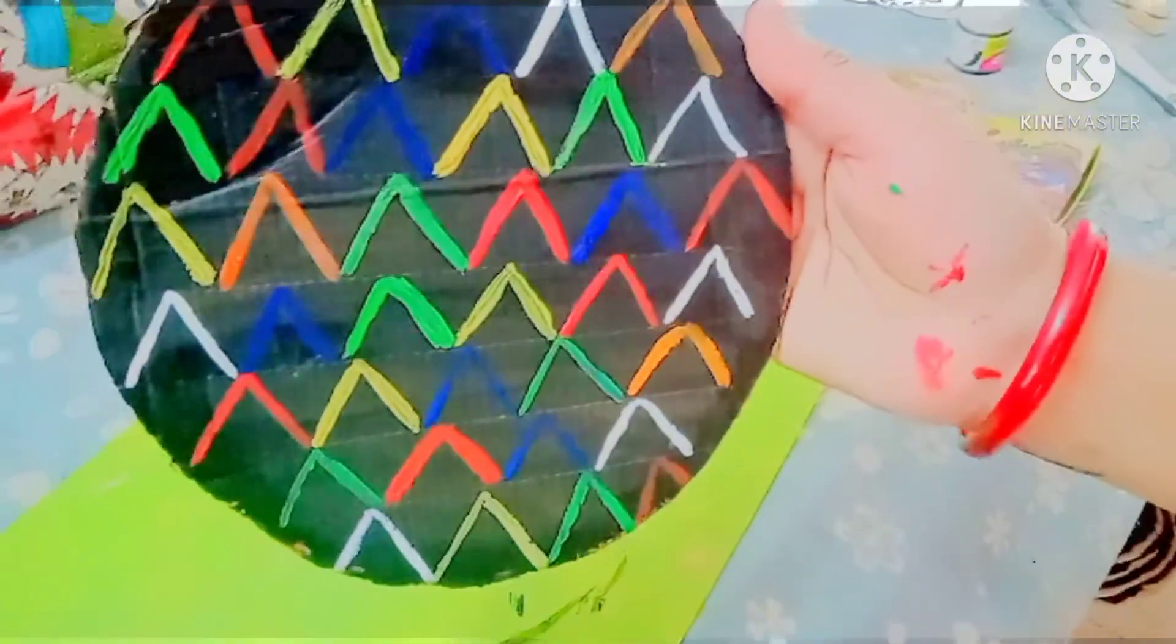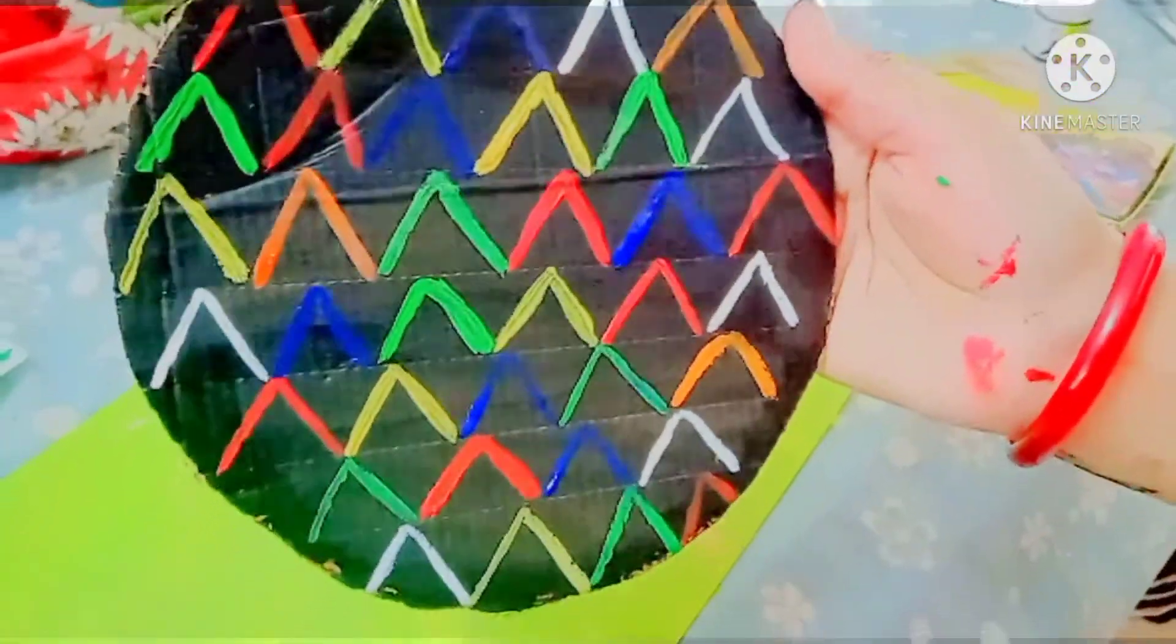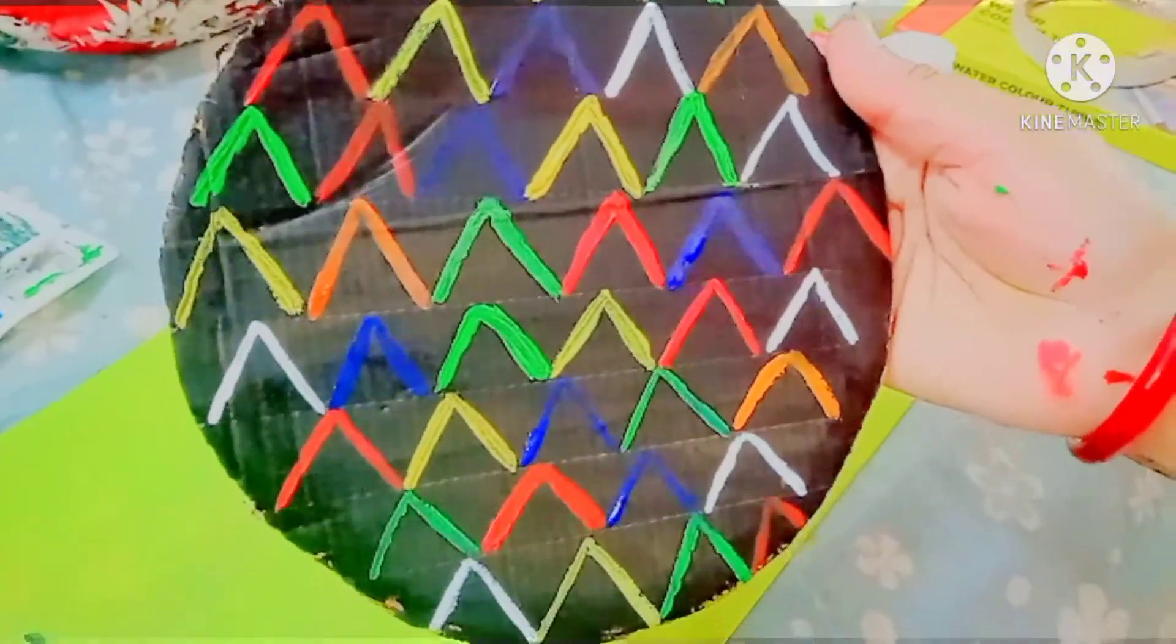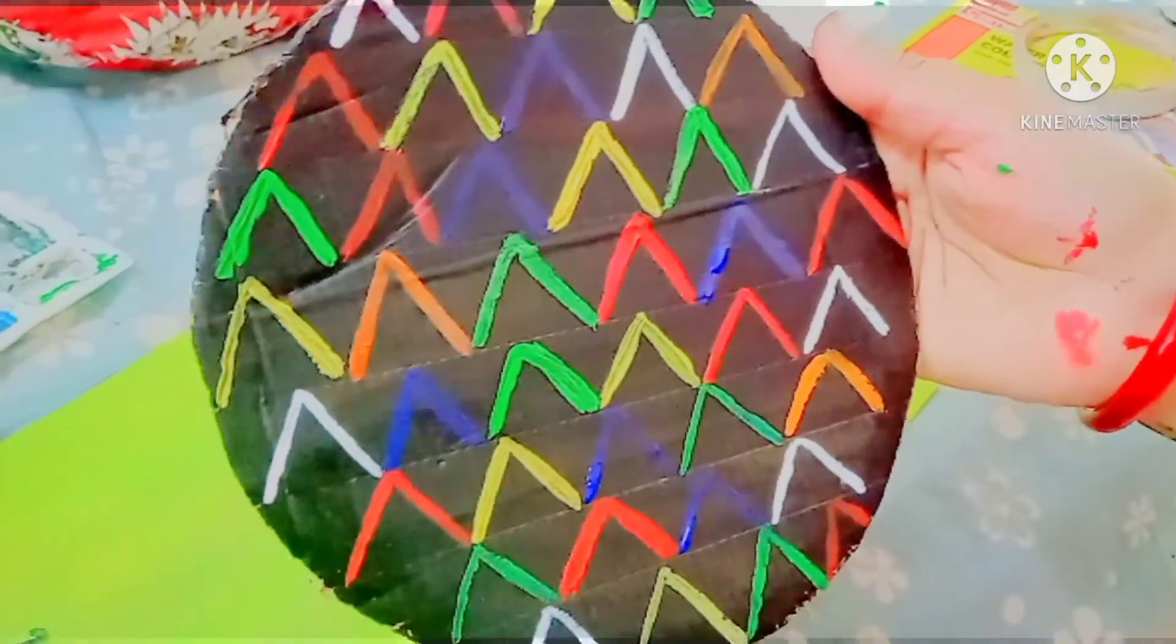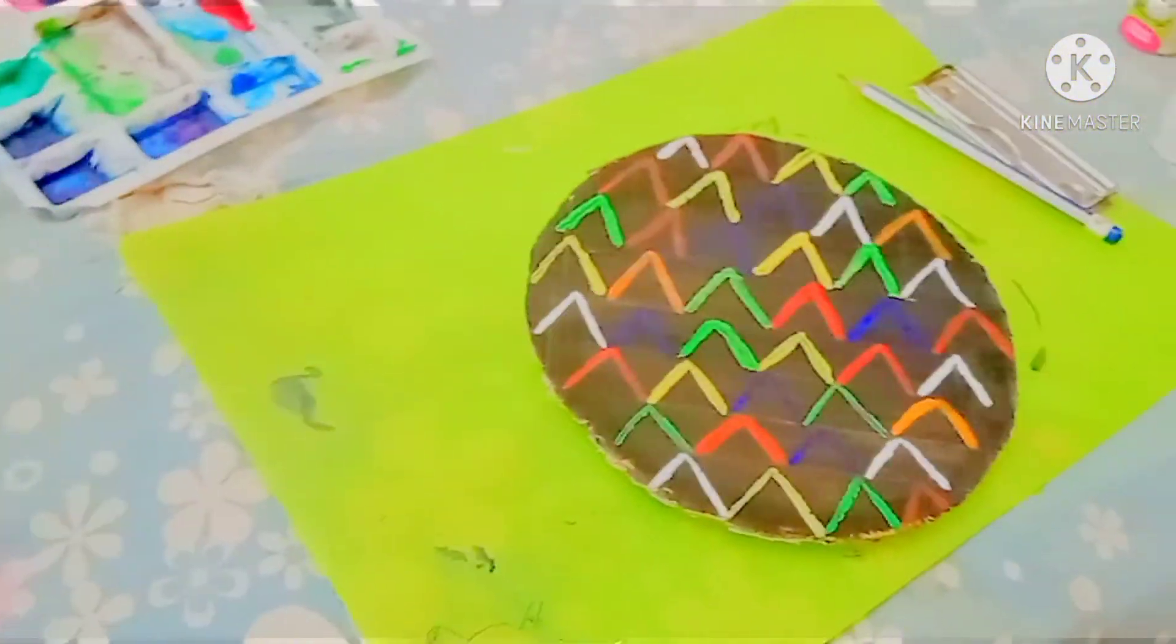After finishing it will look like this. If you have any problem regarding color combination, just take the screenshot of this art, and whenever you start making, you can look at it and you can do it. After completing this we are going to make a tassel.